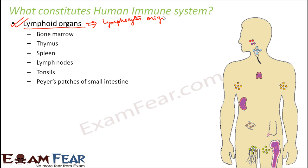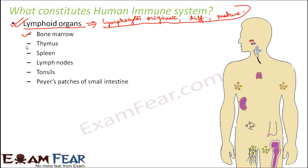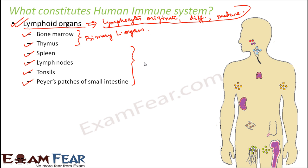Lymphocytes will be produced, take birth, grow, differentiate, and become mature in the lymphoid organs. The different lymphoid organs are: bone marrow, thymus, spleen, lymph nodes, tonsils, and Peyer's patches of the small intestine. Out of these, bone marrow and thymus are known as the primary lymphoid organs, whereas spleen, lymph nodes, tonsils, and Peyer's patches are known as the secondary lymphoid organs.